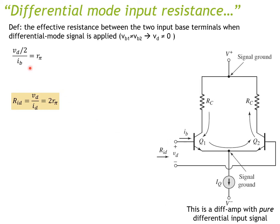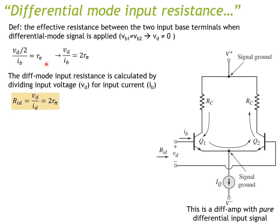Starting from that equation, we move IB to the denominator and the factor of 2 to the other side, giving us the ratio VD over IB. So we can define the differential mode input resistance as 2Rπ. However, this is only true for this configuration where there is no emitter resistor RE.